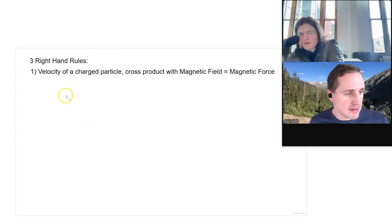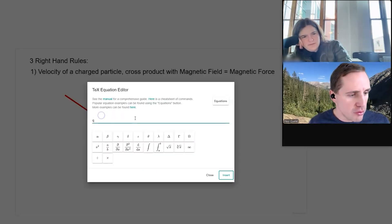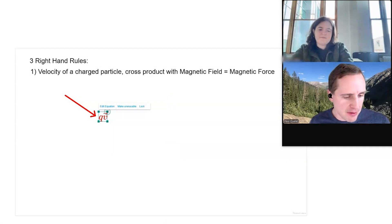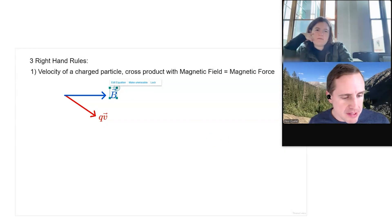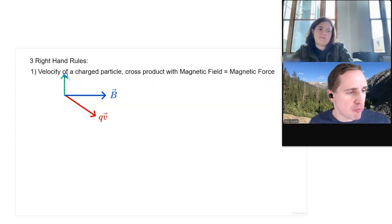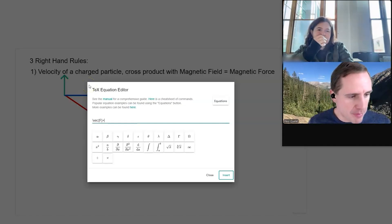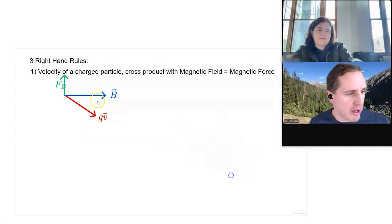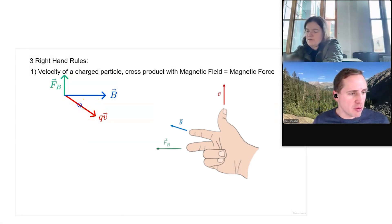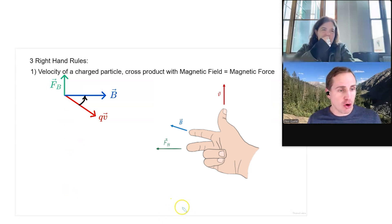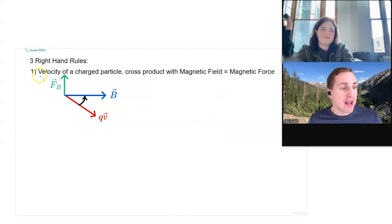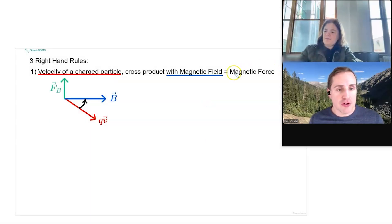If you have a charged particle moving, that's q times v, v being the velocity, and you have a magnetic field vector, then the magnetic force will be perpendicular to both of them. The direction is given by the right-hand rule. The magnetic force is sometimes called the Lorentz force. We cross product qv into B, and then the thumb points in the direction of the magnetic force. This applies when a charged particle moves through a magnetic field.